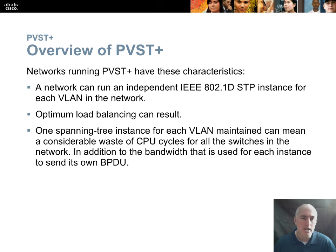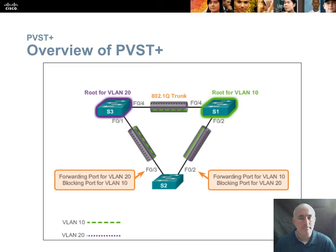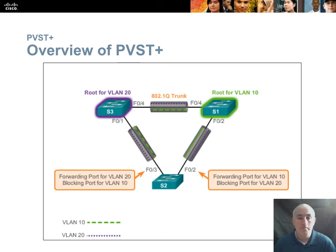Here's an example with two different root bridges: Switch 1 is the root bridge for VLAN 10, and Switch 3 is the root bridge for VLAN 20. Switch 2 will have two different root ports—a VLAN 20 root port of F03 and a VLAN 10 root port of F02.